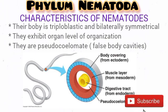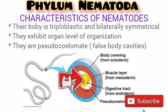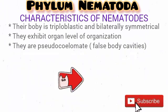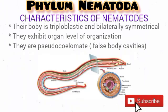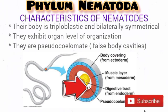Take a look at this diagram — you can see the ectoderm, the mesoderm, and the endoderm. They are also bilaterally symmetrical, which means they can be cut into two equal halves through one plane. Note that nematodes are pseudocoelomates — you can see the pseudocoelom in the diagram. They exhibit an organ level of organization.